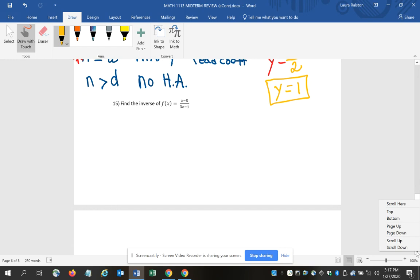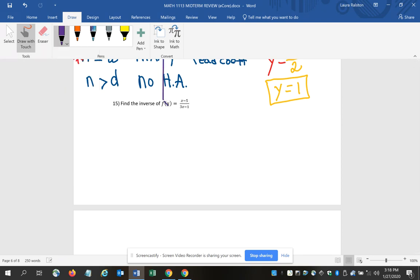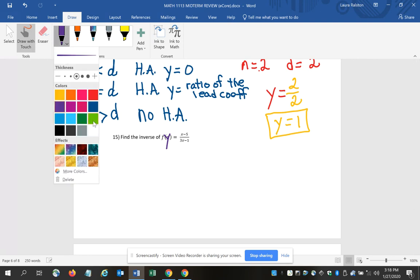Next question says, find the inverse of the function x minus 5 all over 3x minus 1. One of the things I want to remind you about is that in this format, f of x and y are the same value – f of x and y represent the same thing, they're interchangeable.